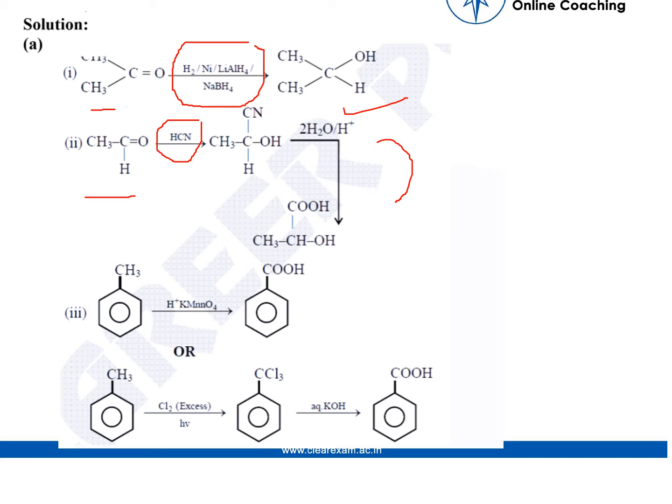(iii) Toluene to benzoic acid can be converted under H+ and KMnO4.